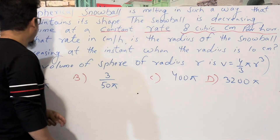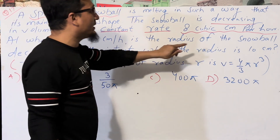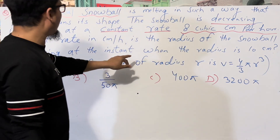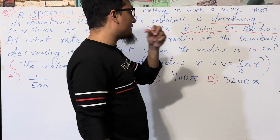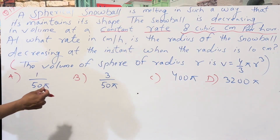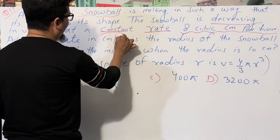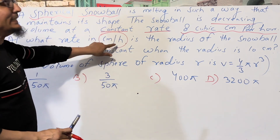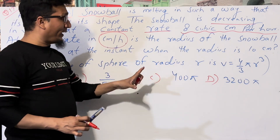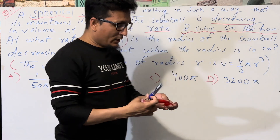The question asks: at what rate in centimeters per hour is the radius of the snowball decreasing at the instant when the radius is 10 centimeters? So we need to find dr/dt when r = 10 cm.